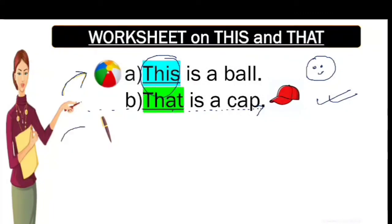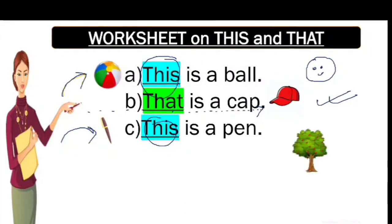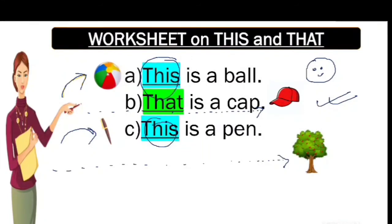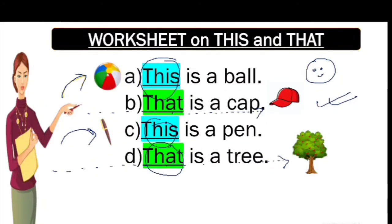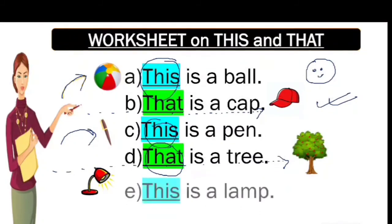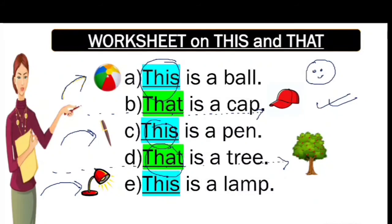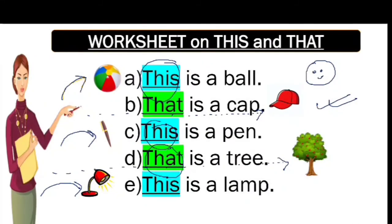Pen — pen is present near Miss Rosie, so the answer is: this is a pen. Tree — tree is present far away. Miss Rosie is walking to the tree, so: that is a tree. Lamb — this is a lamb, which is present near Miss Rosie, so: T-H-I-S, this.